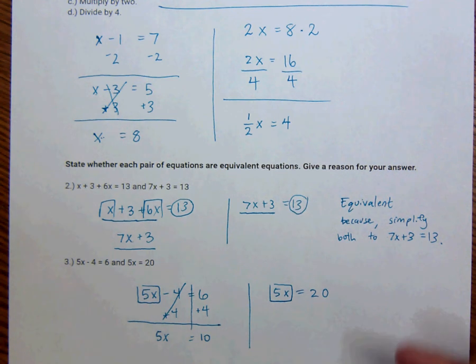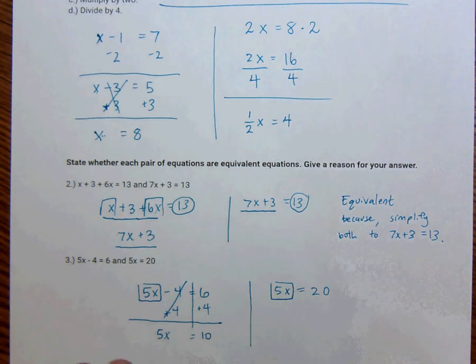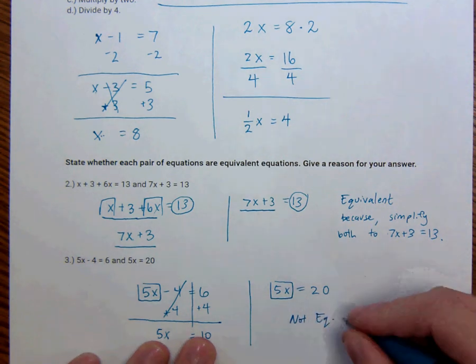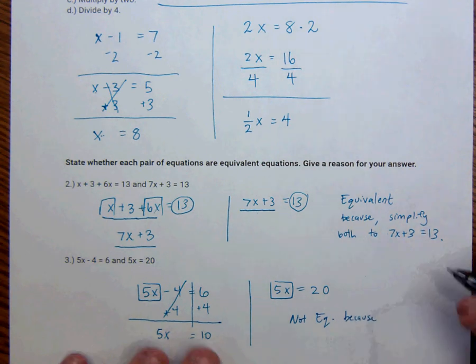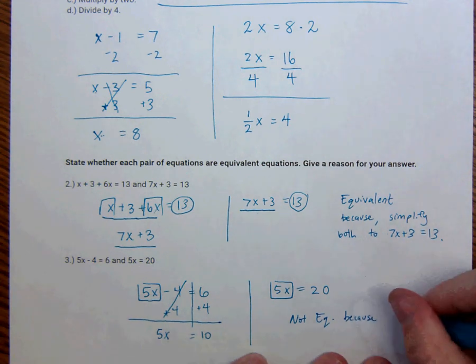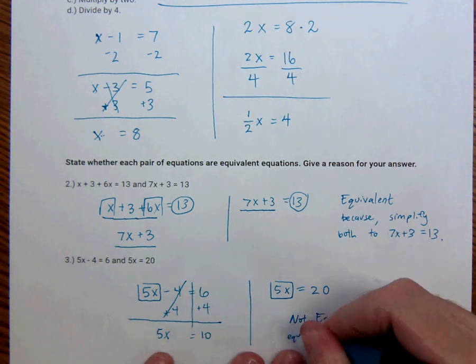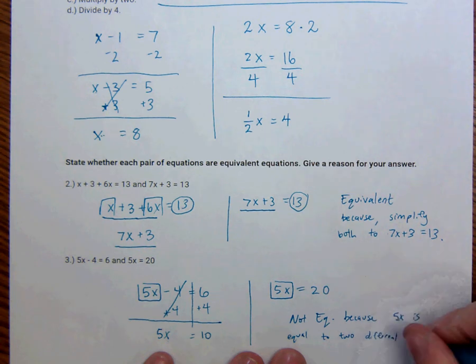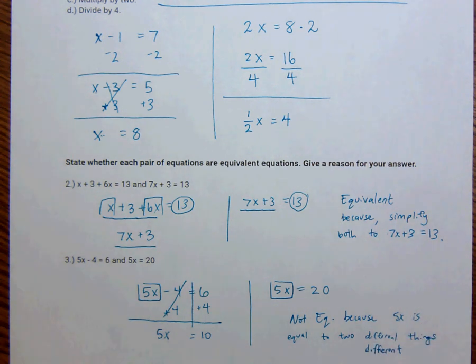They should have the same solution, but they won't because they're equal to two different things. The solution to this is x equals 2 because 2 times 5 is 10. And this is 4. 5 times 4 is 20. So not equivalent. Because 5x is equal to two different things. Sorry, that is not a very good spelling of different. Maybe it looks like the word now. Alright.